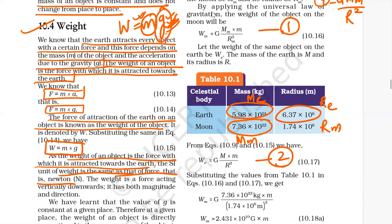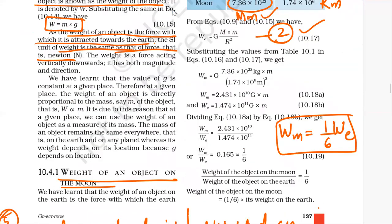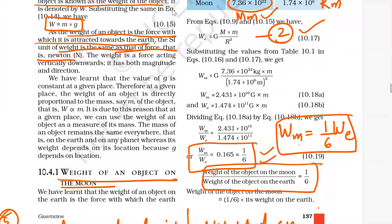If we are asked to derive this relation or to prove that weight of any object on the moon is one-sixth of weight on earth, we write these two relations, substitute the values of mass of earth, mass of moon, radius of earth, and radius of moon, and at last we write that this gives Wm equals 1/6 We. You don't have to calculate — just write the final result directly.